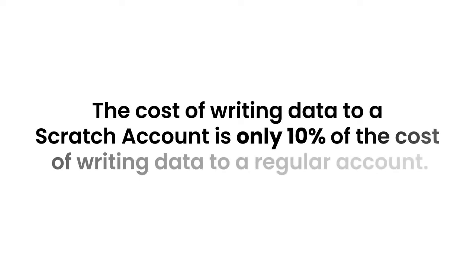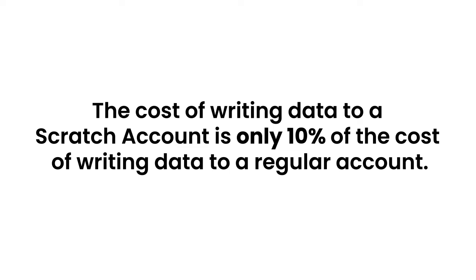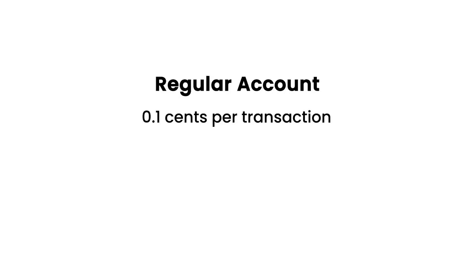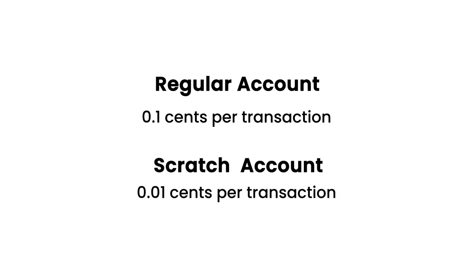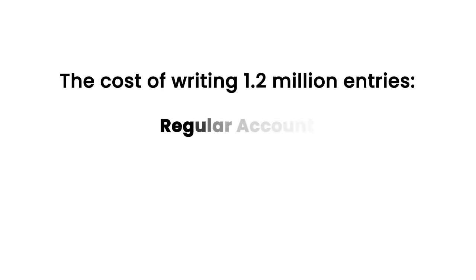The first signature is free, and additional signatures cost 0.01 cents each. In our example, we're going to assume that only one signature is needed per transaction to make things easier. The cost of writing data to a scratch account is only 10% of the cost of writing data to a regular account. For a regular account, that's 0.1 cents per transaction; for a scratch account, that drops to 0.01 cents per transaction. The cost of writing 1.2 million entries would therefore be $1,200 for a regular account and only $120 for a scratch account.